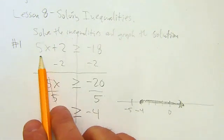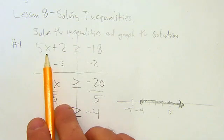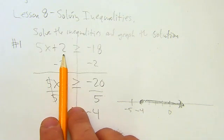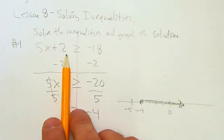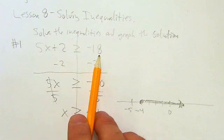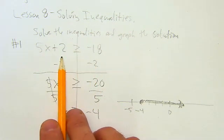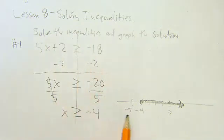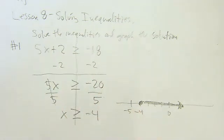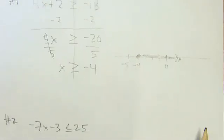5 times -5 is -25. -25 plus 2 is -23. Is that greater than -18? No, it's actually less. -23 is actually less. So anything you plug in over here is going to make it not true. You plug in -4, it should be true also. All right, let's do one more. This one's a little different, so pay attention.